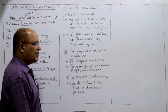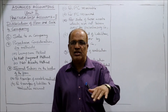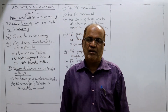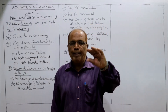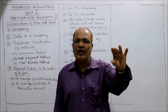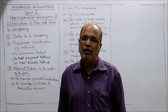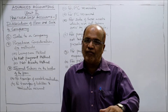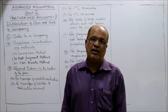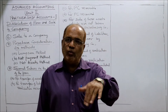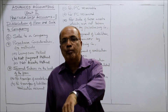Next is transfer of accumulated profits and reserves. In the partnership firm's balance sheet, items like general reserve, reserve fund, and P&L account credit balance are accumulated profits. Entry: General Reserve Account debit / Reserve Fund Account debit / P&L Account debit to Partners' Capital Account in the old profit sharing ratio. If there is an accumulated loss — P&L account debit balance on the asset side — then all Partners' Capital Account debit to P&L Account.